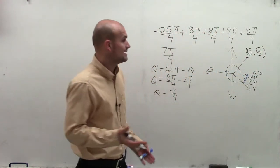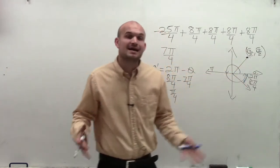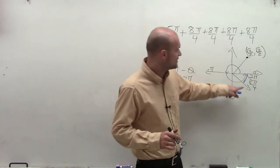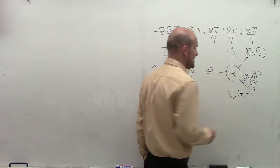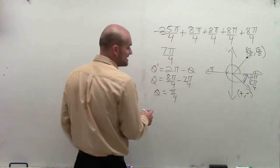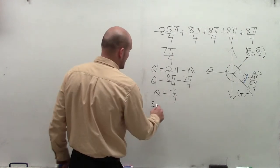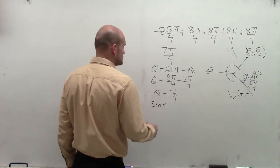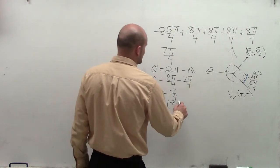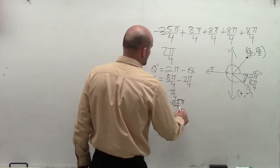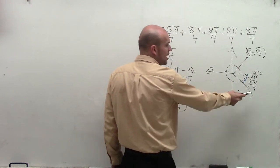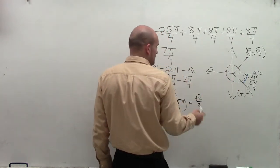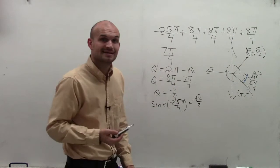So now I can evaluate for sine, cosine, and tangent. But we can't forget when in quadrant 4 that our x coordinate is positive, but our y coordinate is negative. When I evaluate for my sine function, the sine of negative 25 pi over 4 represents the y coordinate, which is square root of 2 over 2. However, since my angle is in the fourth quadrant, that's going to be negative.